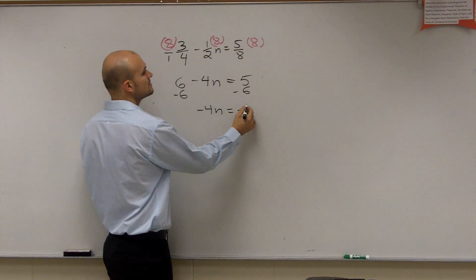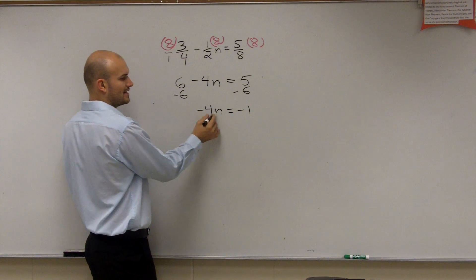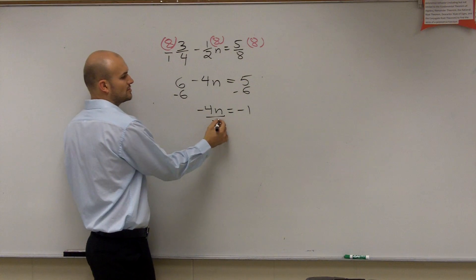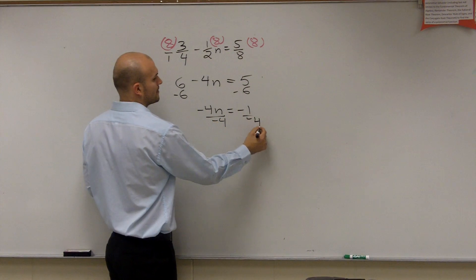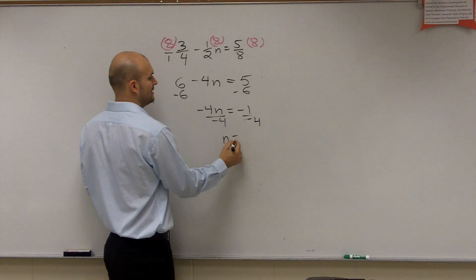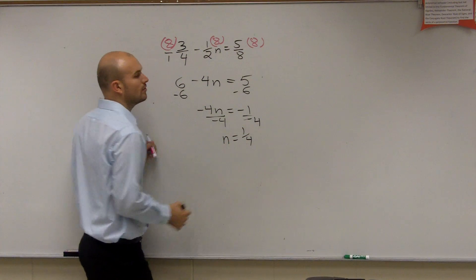Negative 4n equals negative 1. Then I need to undo multiplication by negative 4. So I divide by negative 4. And I get n equals positive 1/4.